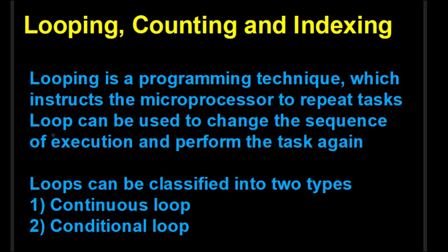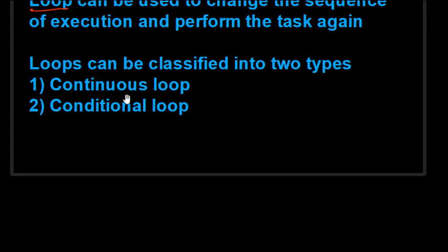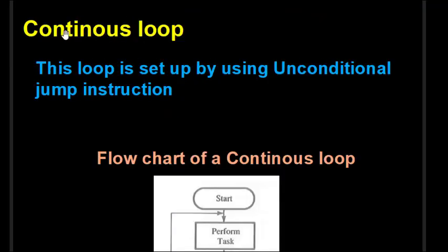By using a loop we can change the sequence of execution so that we can run some instructions again and again. Loops can be classified into two types: the continuous loop and the conditional loop. A continuous loop is made to run forever — some programs are designed to run forever, so in those cases we use the continuous loop. A conditional loop repeats the task when a specific condition is satisfied.